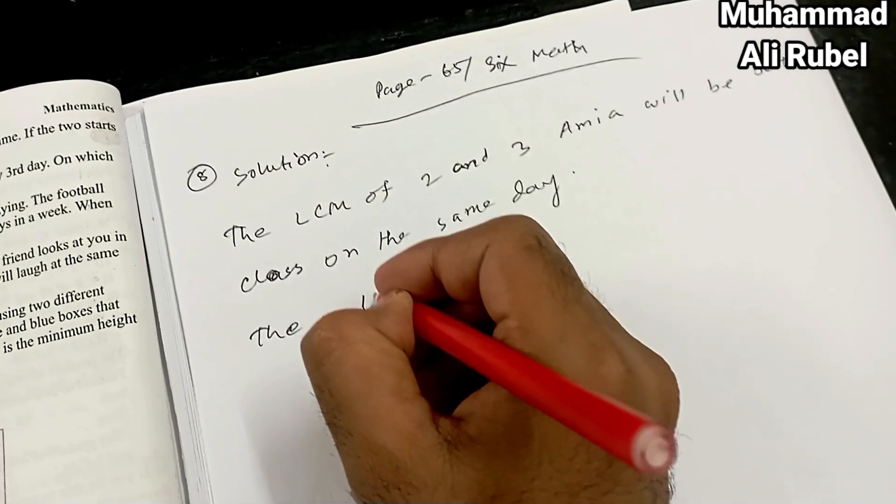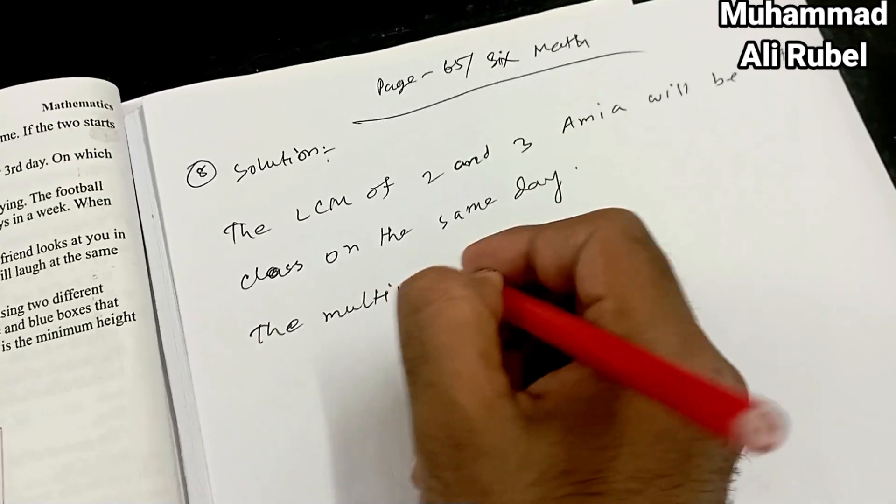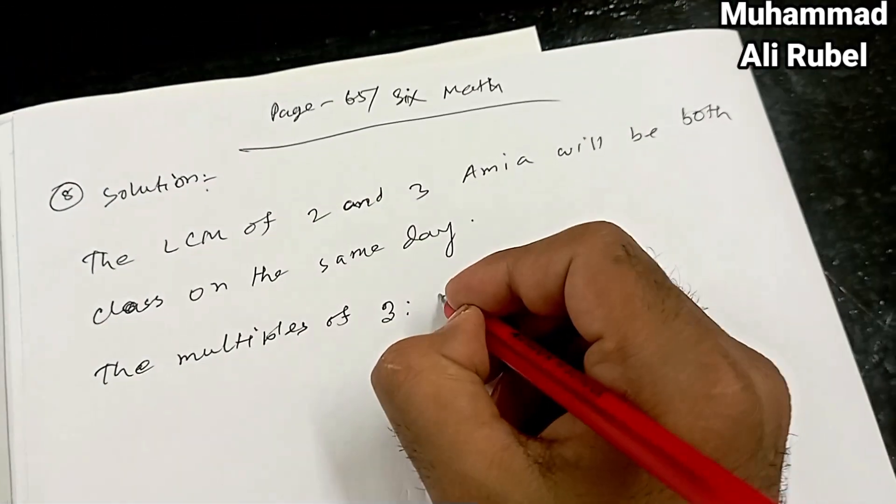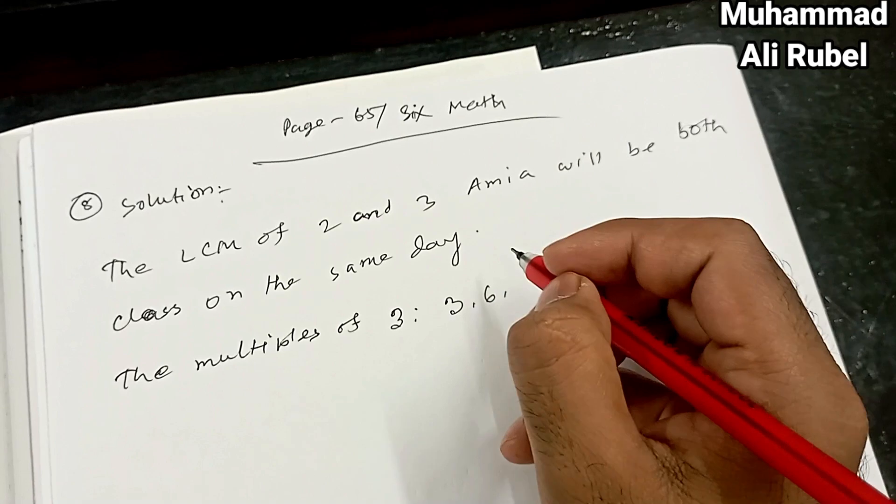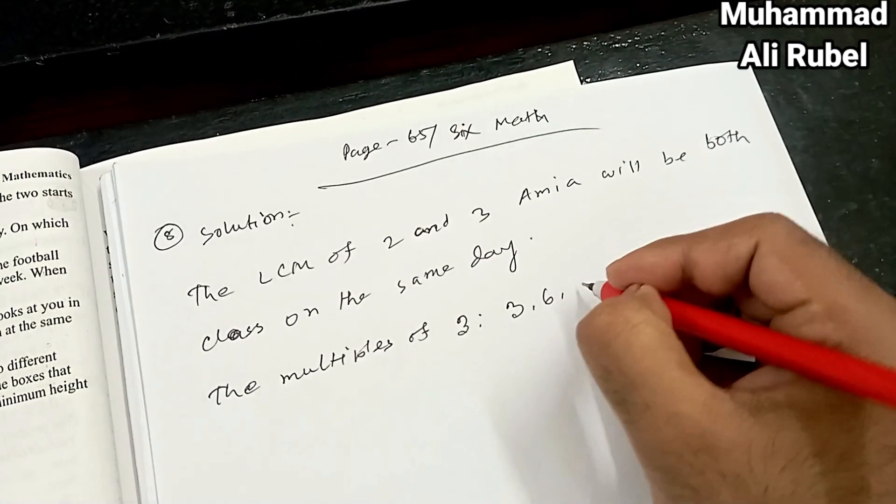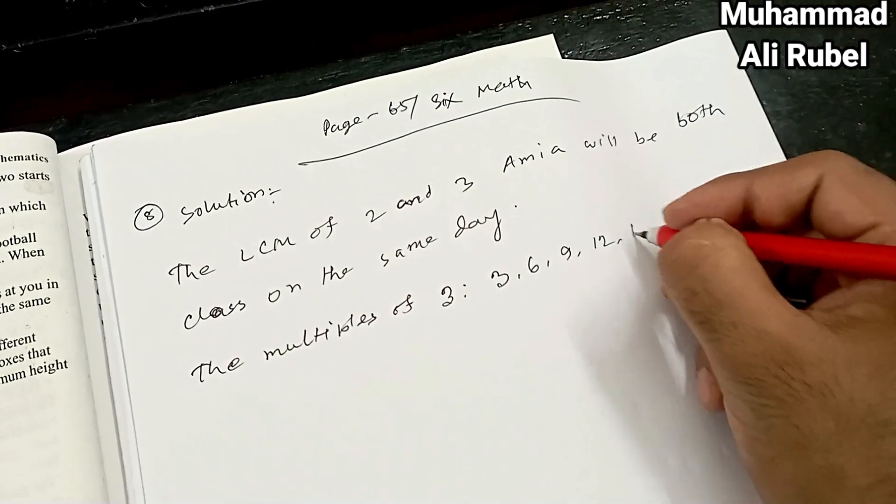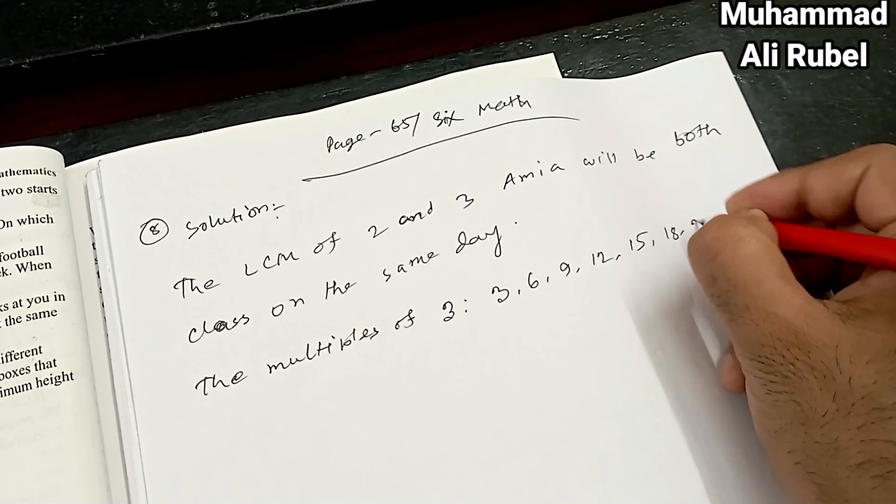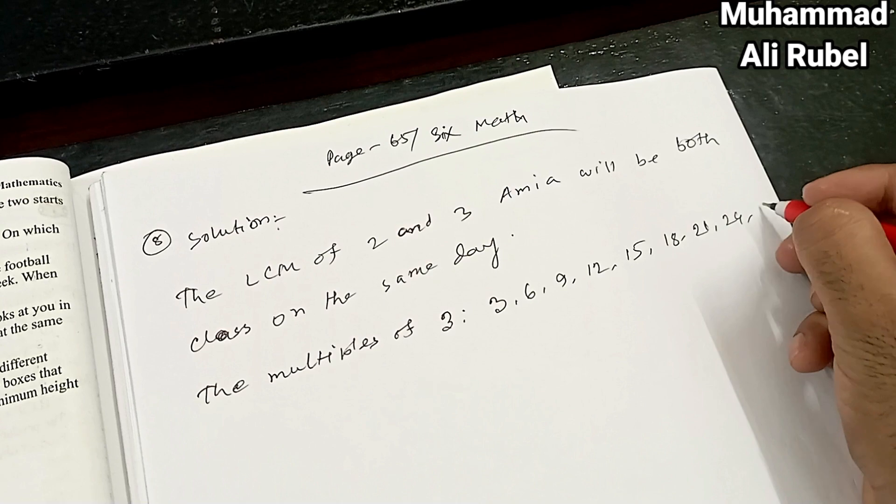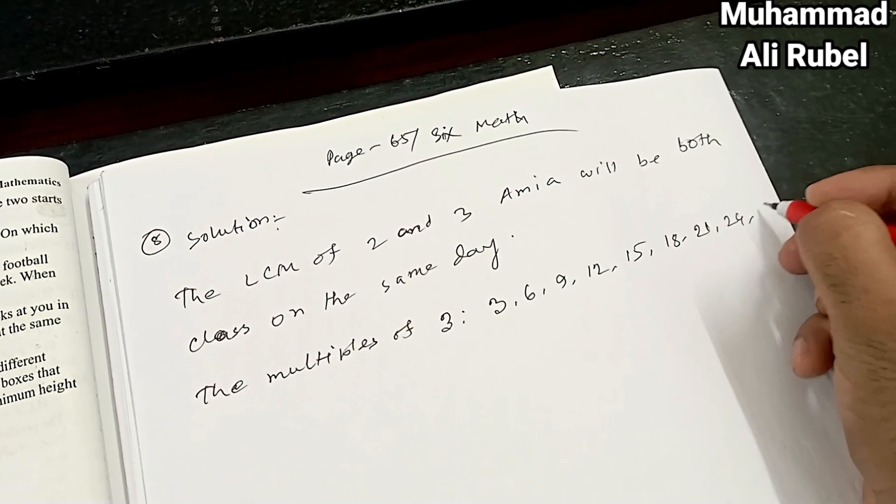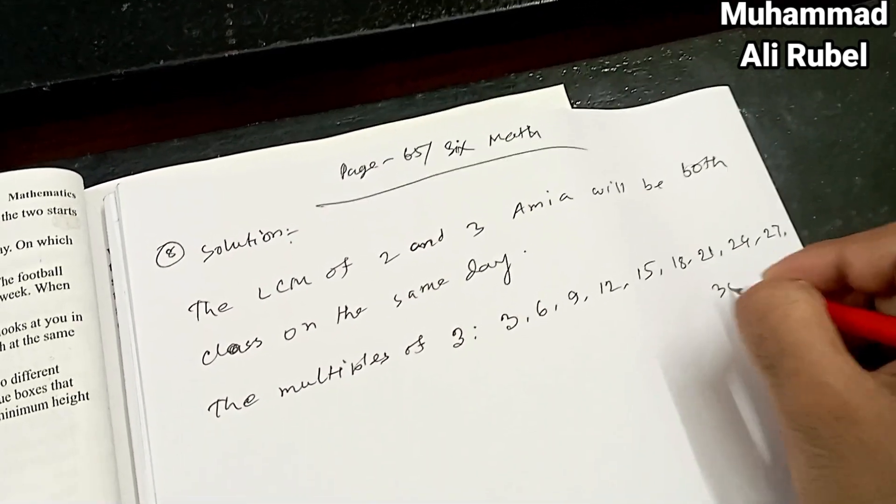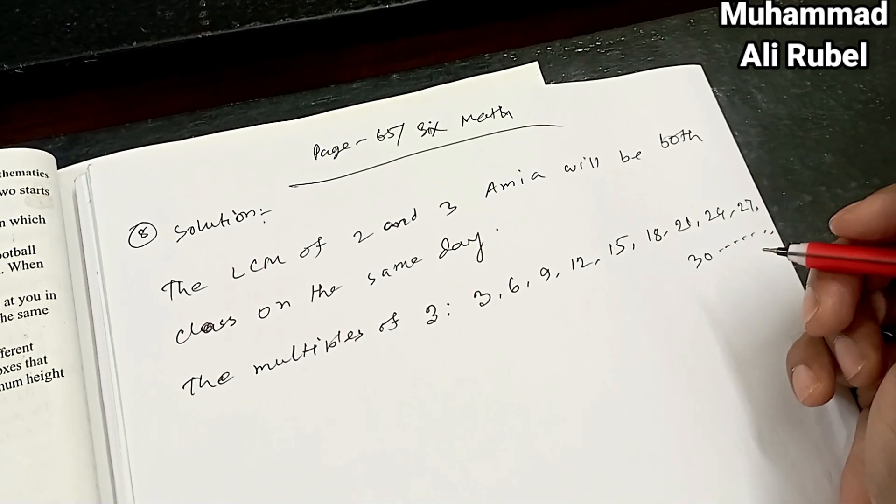The multiples of 3: 3, 6, 9, 12, 15, 18, 21, 24, 27, 30, and so on to infinity.